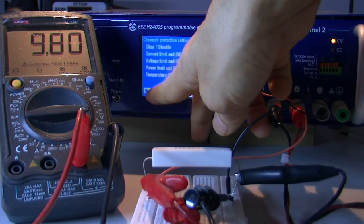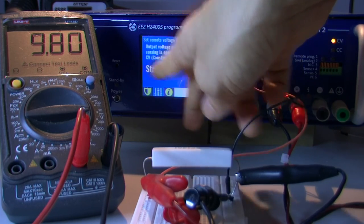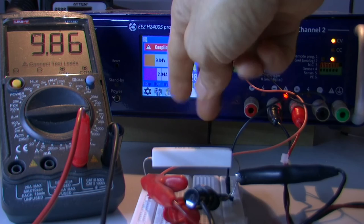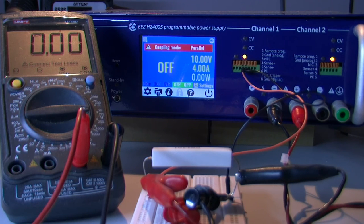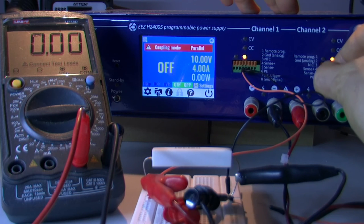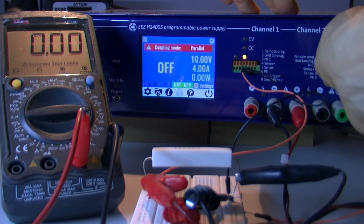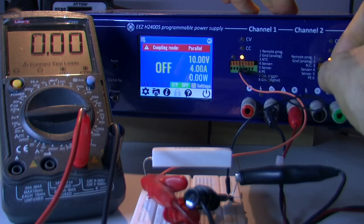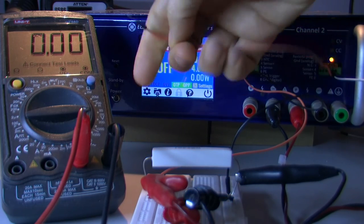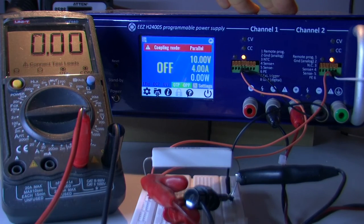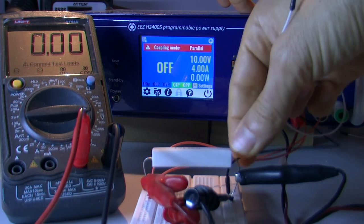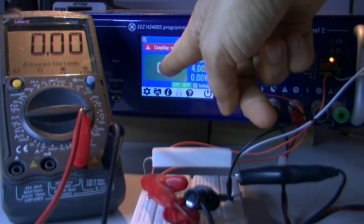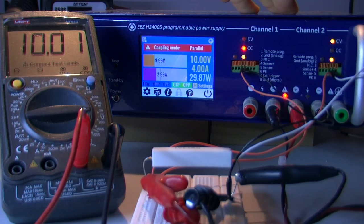If we try to activate remote sensing with just one channel connected, it's a little bit better but still it's not what we need. And I will use another set of cables and connect it once again close to load terminals. And what we see now is again 10 volts.